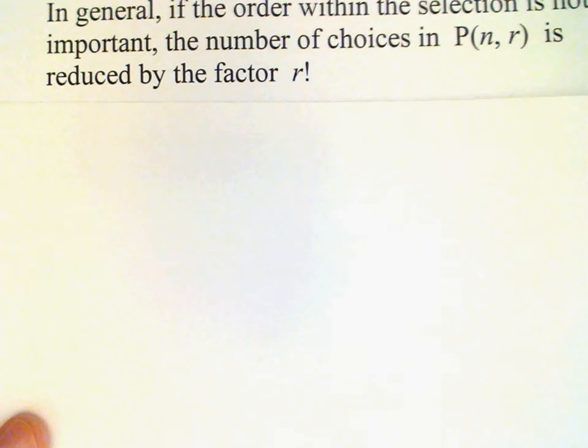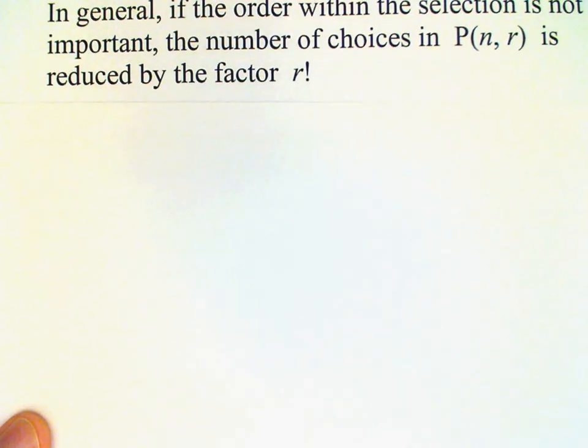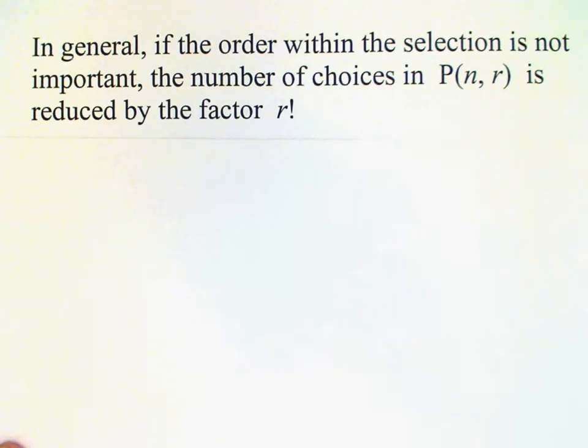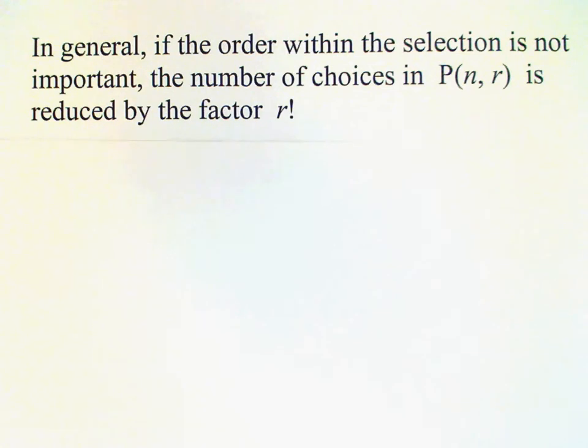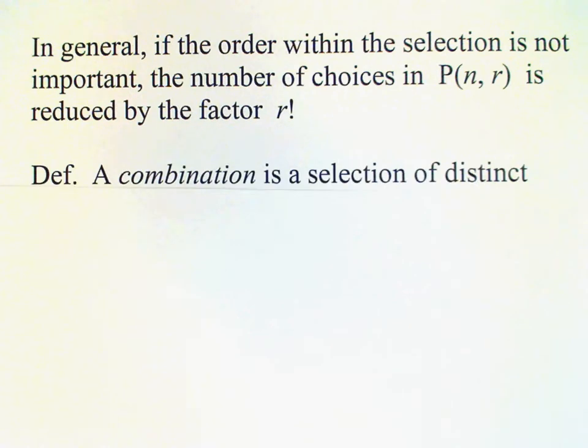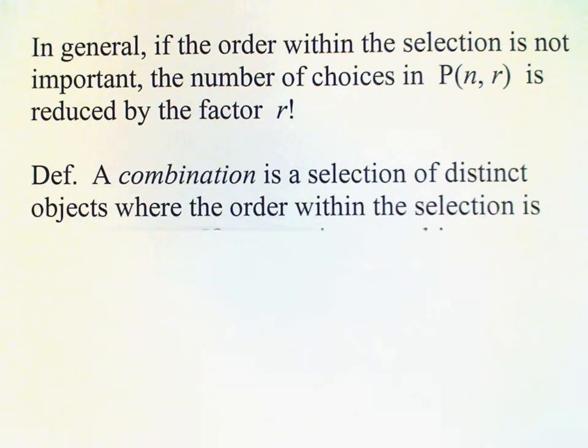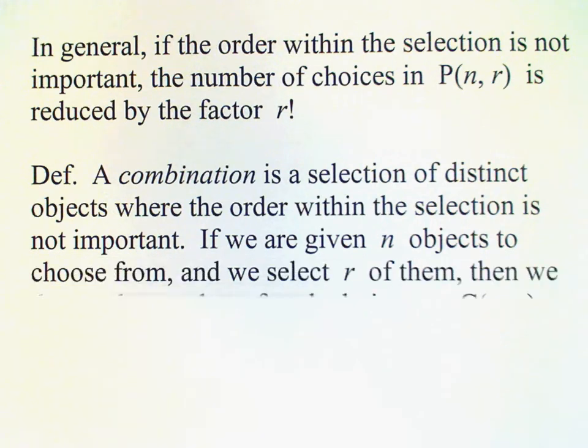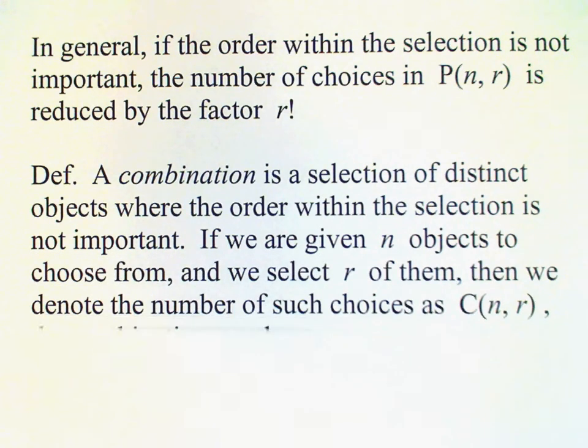And in general, if the order within the selection is not important, then the number of choices in P(n, r) will be reduced by a factor of r factorial. And this kind of count comes up fairly often too, so we give it another special name which is known as the combination.